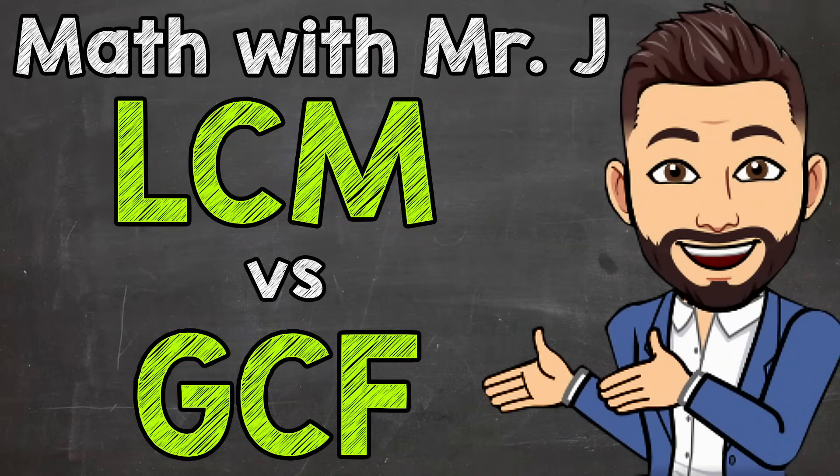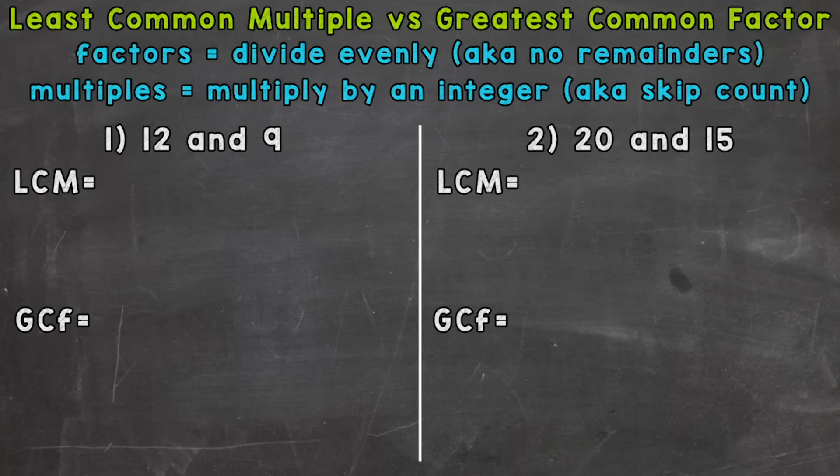Welcome to Math with Mr. J. In this video, I'm going to cover the difference between greatest common factors and least common multiples. I do want to mention before I start with this that I have a video that goes more in depth about multiples and factors if you need more clarification on those. That link is down in the description. For this video, we have two examples that we're going to go through together in order to get this down.